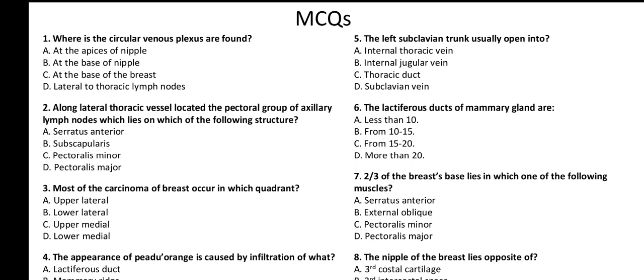For number one, my answer is C — at the base of the breast. Number two: Along the lateral thoracic vessel, the pectoral group of the axillary lymph nodes lies on which structure? The pectoral group is related to the pectoral muscles, so I think they lie on the pectoralis major. I'll go with D.